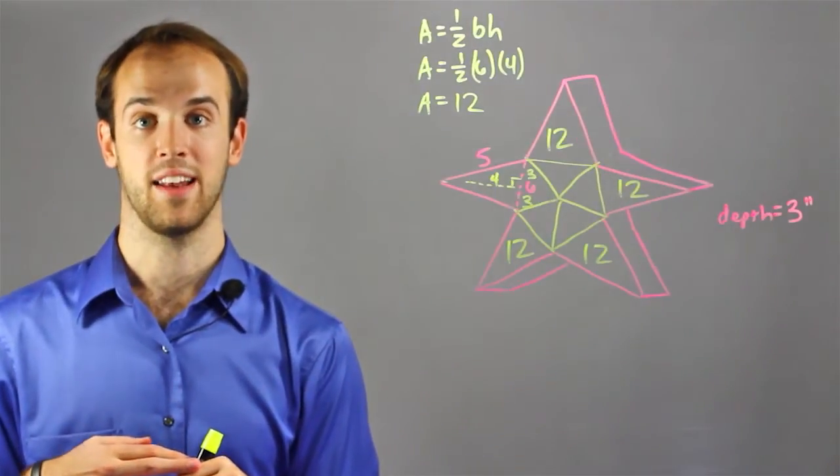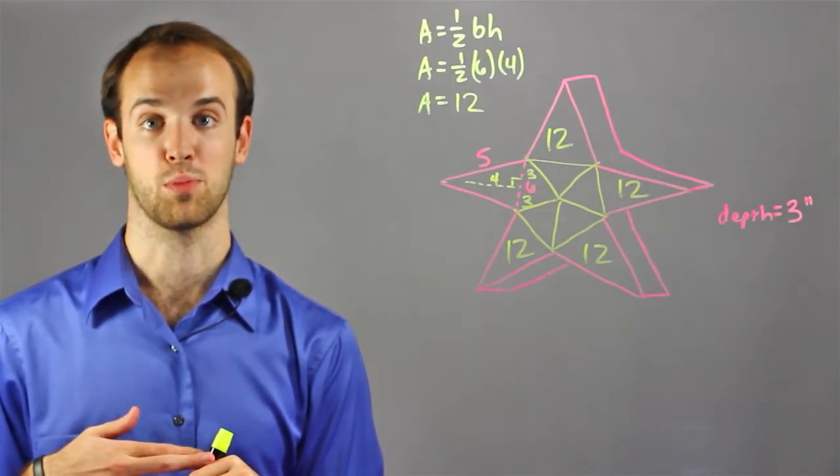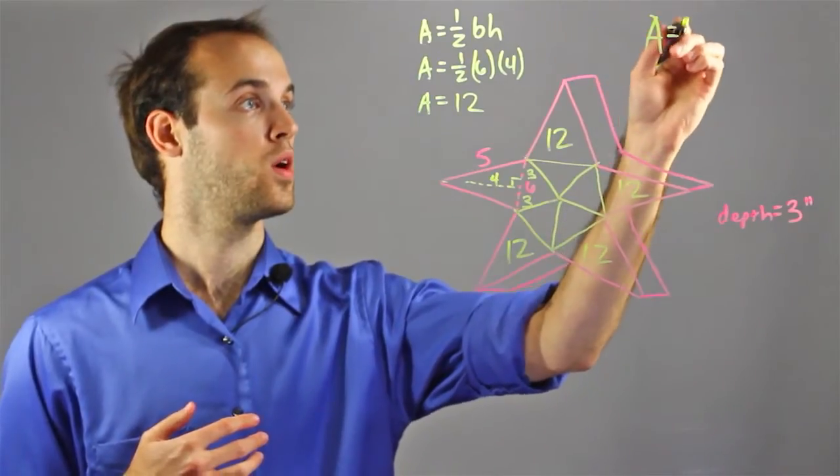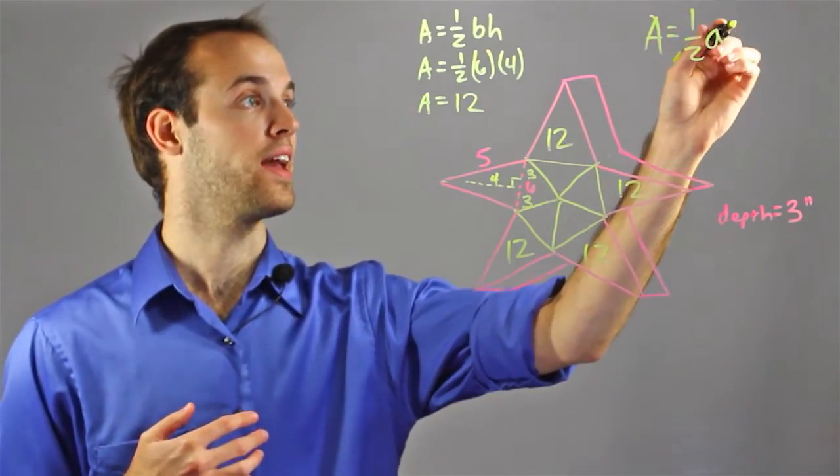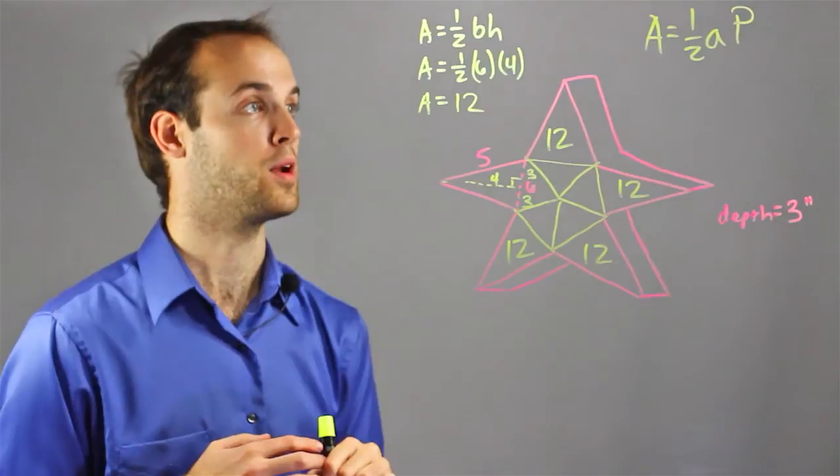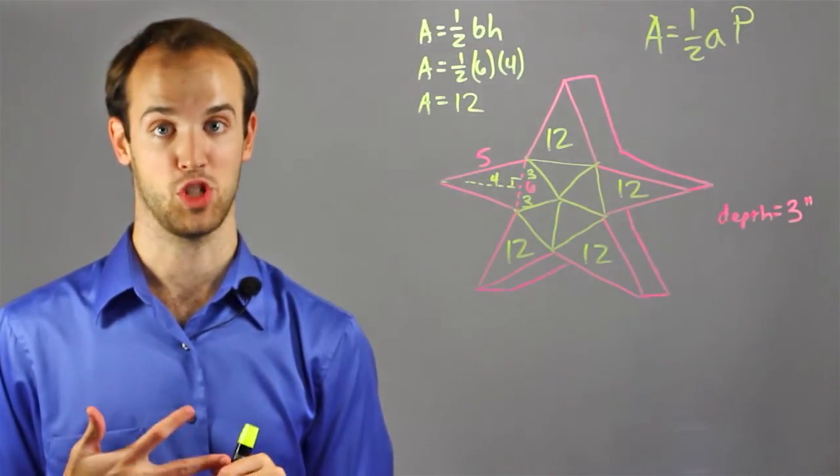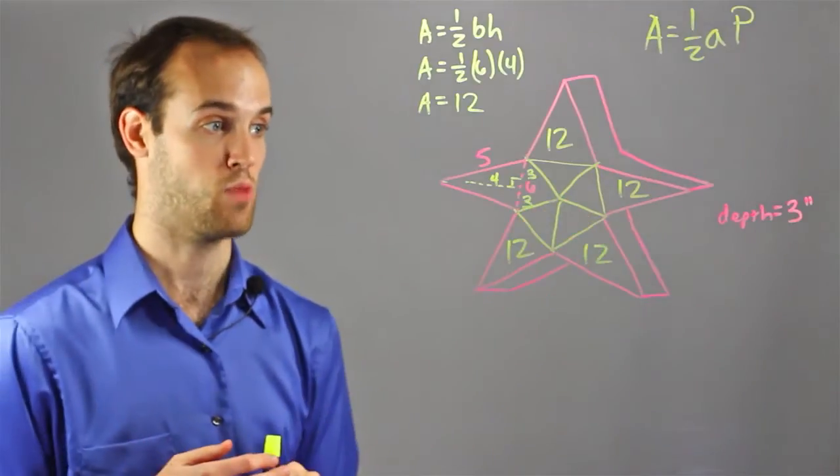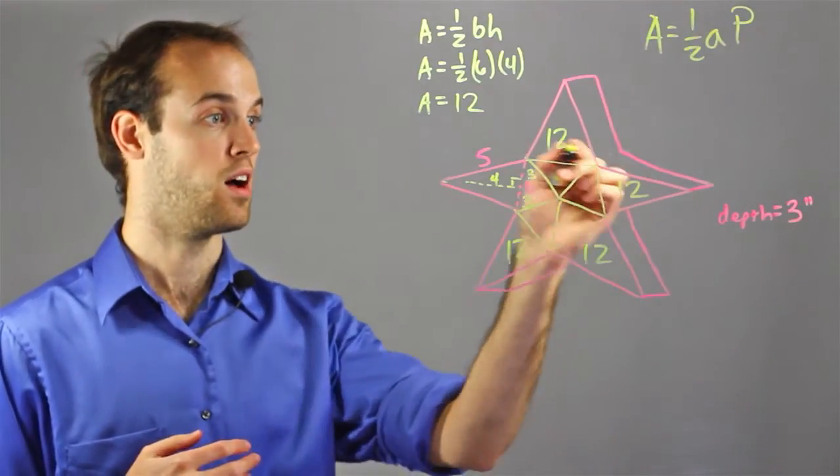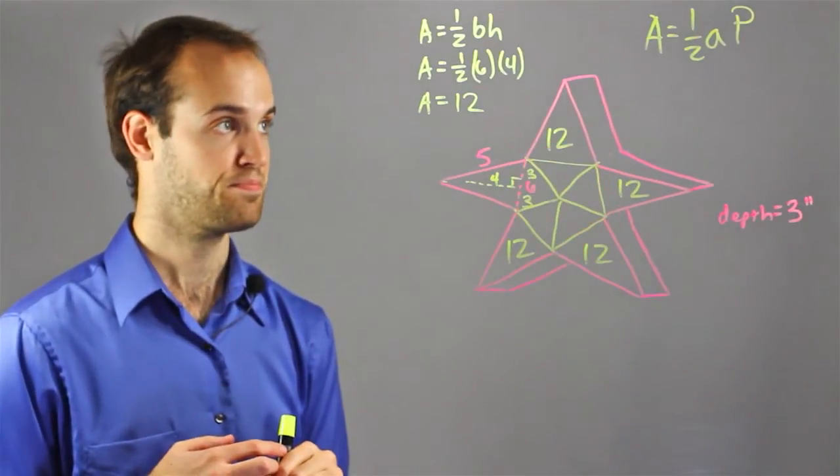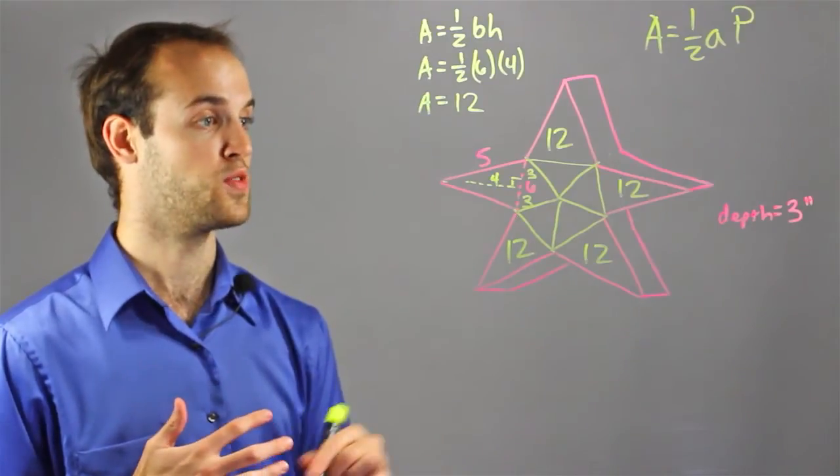And I'm going to use that in the area formula, which is abbreviated A equals one-half little a times P, or perimeter. The little a is your apothem, and I can use that for any regular shaped polygon, and I know this pentagon is regular because the base of all the triangles is six. So, all I really need to do is find the apothem, which I can do just like this.